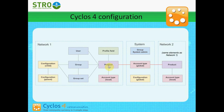We also give some permissions in the product to do payments with this member account. And then we associate this product to a certain group set. Then all groups and all users that belong to this group set can view this account type and do the payments we configured in the product. So the products give the permission to all the users.